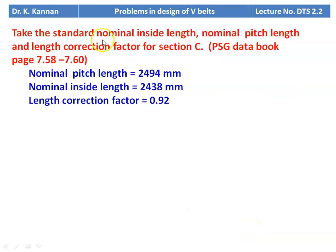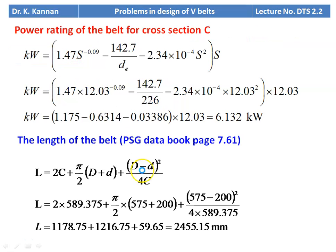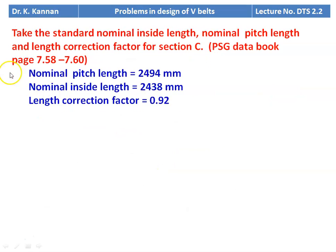We take the standard nominal inside length, nominal pitch length, and arc length correction factor for section C from PSG data book pages 7.58 to 7.60. The calculated length is 2455.15 mm. The next higher nominal pitch length standard value is 2494 mm, the corresponding nominal inside length is 2438 mm, and the length correction factor is 0.92.